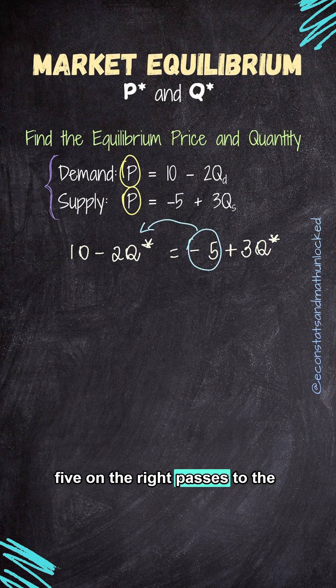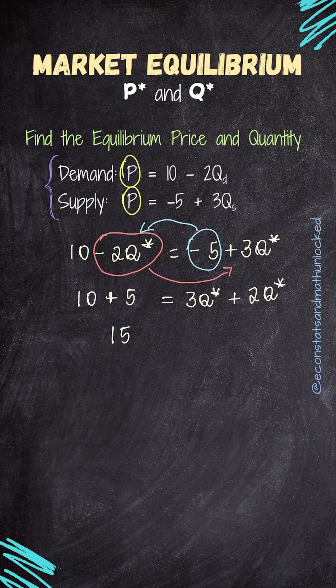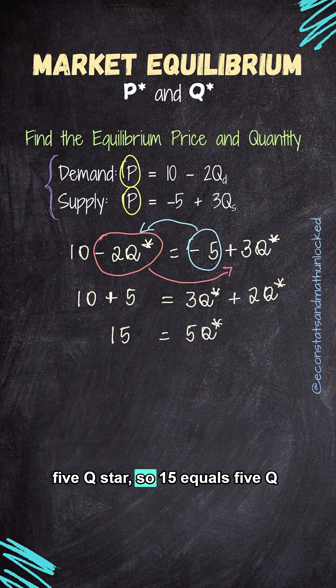The minus 5 on the right passes to the left, becoming plus 5. We invert the operation. The minus 2Q star on the left passes to the right, becoming 2Q star. 10 plus 5 is 15. 3Q star plus 2Q star is 5Q star. So 15 equals 5Q star.